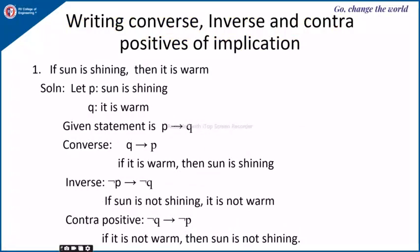Next, we will see how to write the converse, inverse, and contrapositive of an implication. Example 1: 'If sun is shining, then it is warm.' Let P be 'sun is shining' and Q be 'it is warm,' so the statement is P implies Q. The converse of P implies Q is Q implies P, which in sentence form is: 'If it is warm, then sun is shining.'